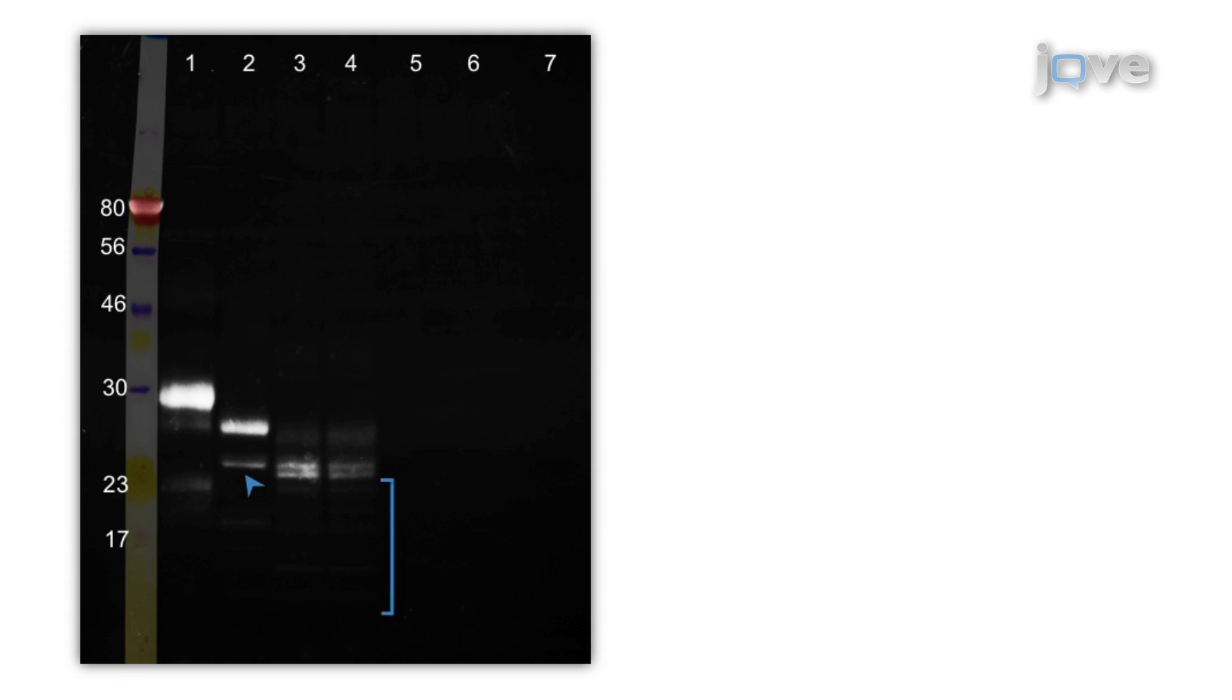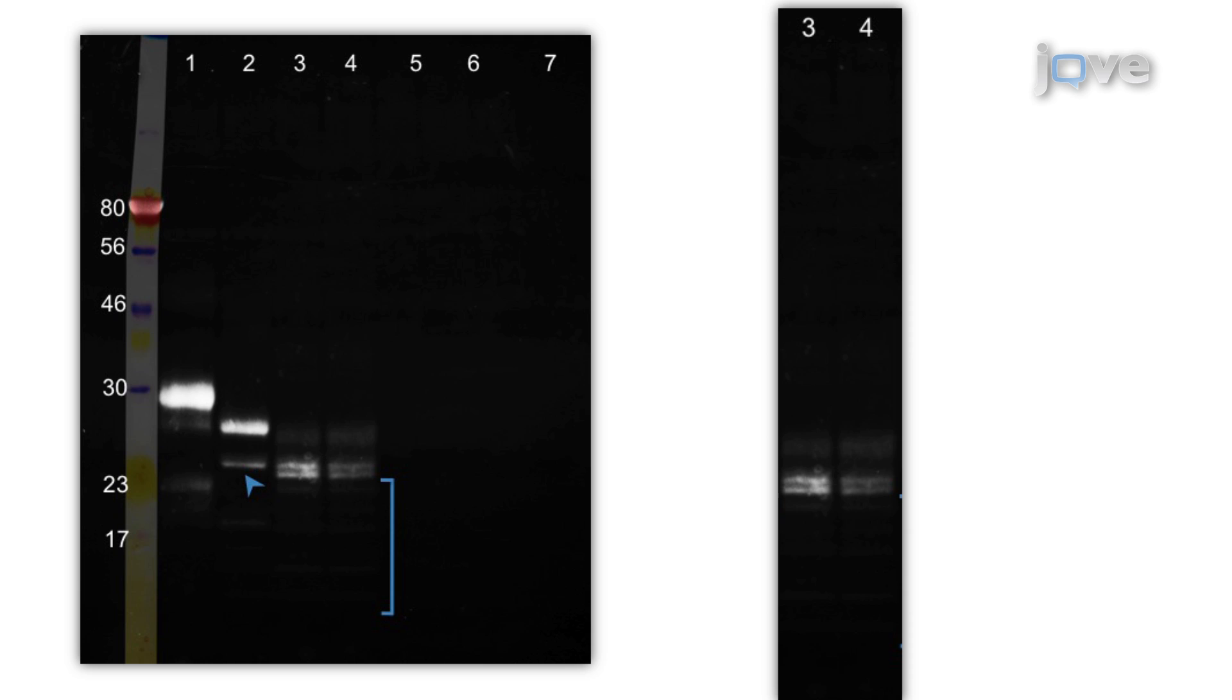The emerald green reagent oxidizes and stains all glycans present in a protein molecule. Therefore, the intensity of the signal decreases as HCG-beta is enzymatically deglycosylated. The residual signal in lanes 3 and 4 indicate the presence of glycan motifs which are resistant to the enzymes used.